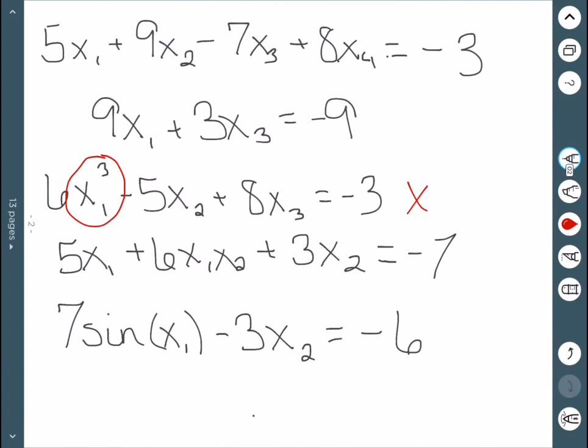The fourth one, in particular, is not linear because of this x1 times x2. We don't want to multiply any of the variables.